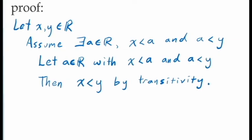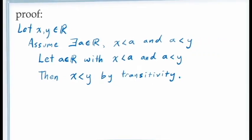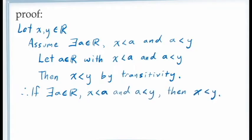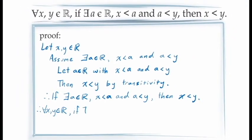All that remains is our conclusions. We can say by the principle of conditional proof that if our antecedent is true, then our consequent follows. And since x and y were arbitrary, we can conclude that this is true for all x and y in the real numbers.